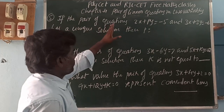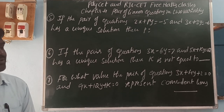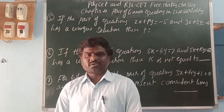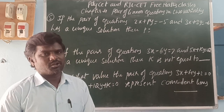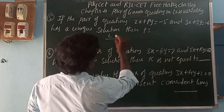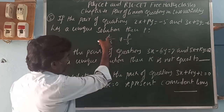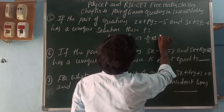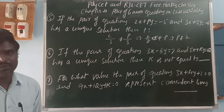Next, if the pair of equations 2x plus py equals minus 5 and 3x plus 3y equals minus 6 has a unique solution, then find p. For a unique solution, the x quotient and y quotient ratios must not be equal. So 2 by 3 is not equal to p by 3. Cross-multiplying: 2 into 3 is not equal to p into 3, so 6 is not equal to 3p, giving p is not equal to 2.